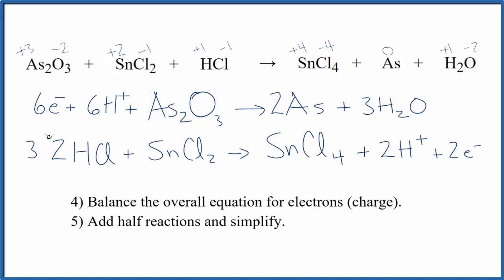What we can do is put a three here, and that'll give us three times two. Six electrons on this side, six on this side. Three applies to everything, but the ratio doesn't change, so that's okay.